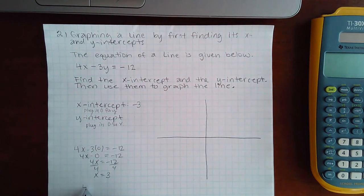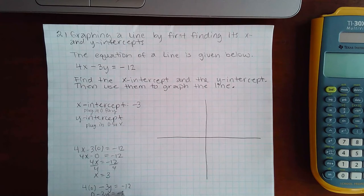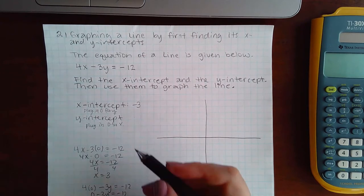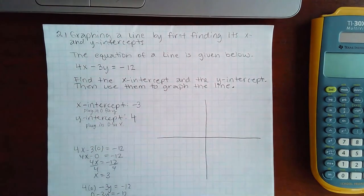Now we're going to plug in zero for x to find the y-intercept. Divide by negative three on both sides, we get positive four. So my y-intercept is positive four.